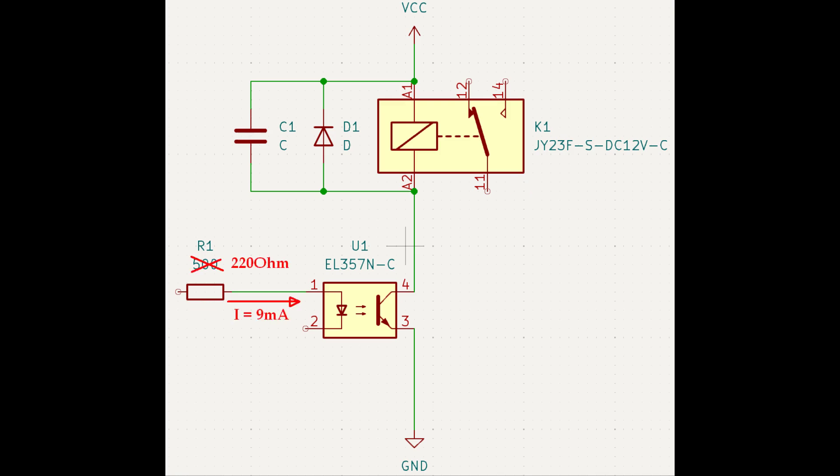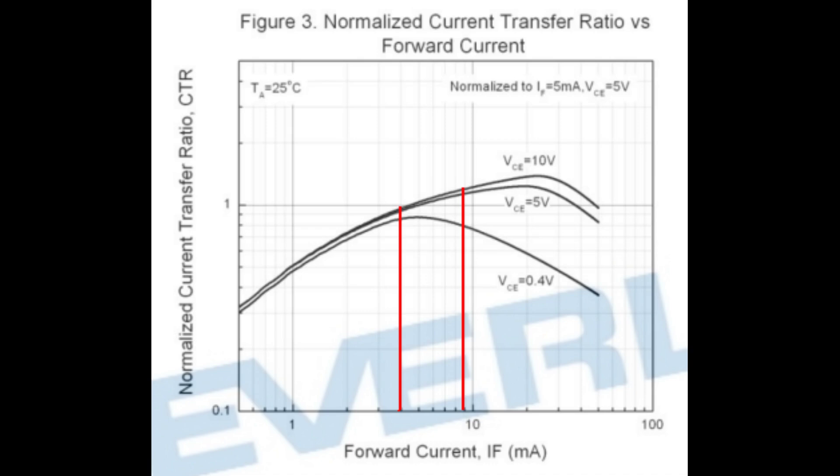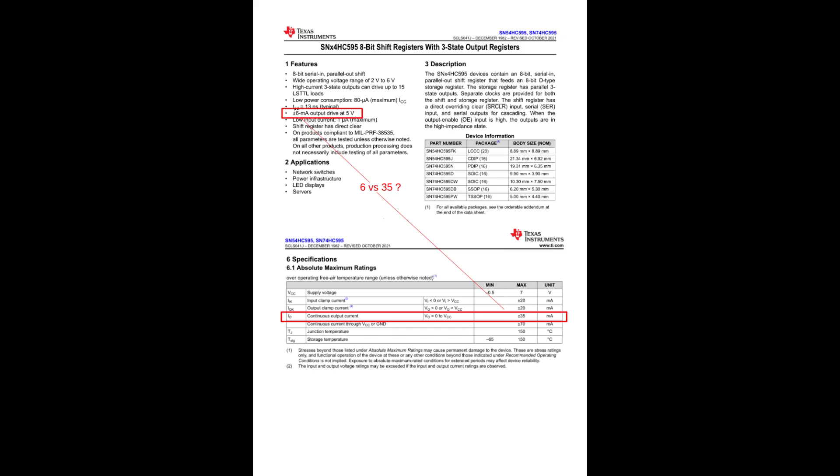Mario's fix is based on the first option by replacing the input series resistor with a lower one at 220 ohms so that the current going towards the optocoupler more than doubles. This does not necessarily mean that the output current will double as well, as the CTR curve is not linear, but it should be enough to make sure there is enough current passing through the relay to toggle it. Note that the device driving the optocoupler needs to be able to source the higher currents too.